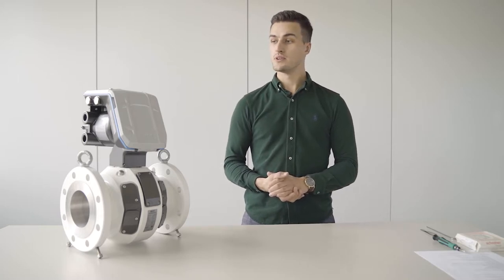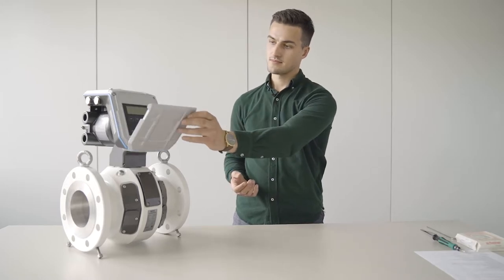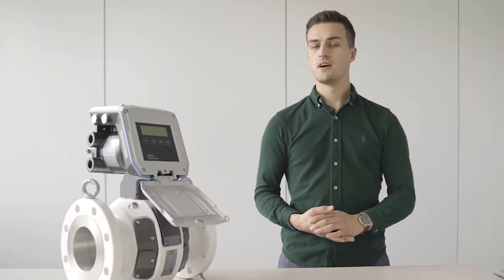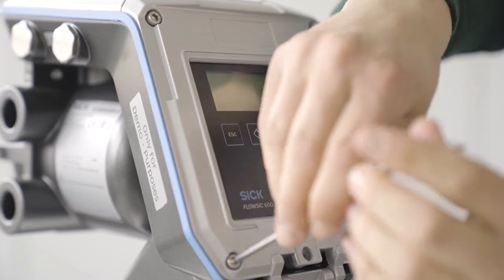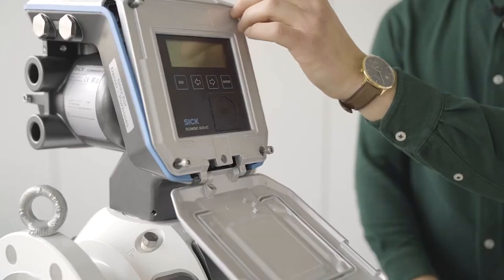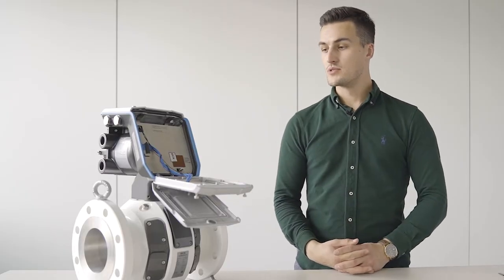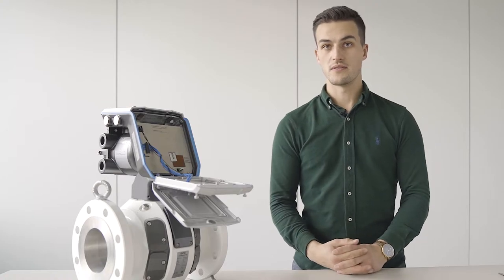First of all, we will need to open the display cover. After that is done, you are facing four screws which need to be loosened to open the display unit. Now you have to swivel down the display unit and you will face a metrological seal which covers the protection lock of the device.